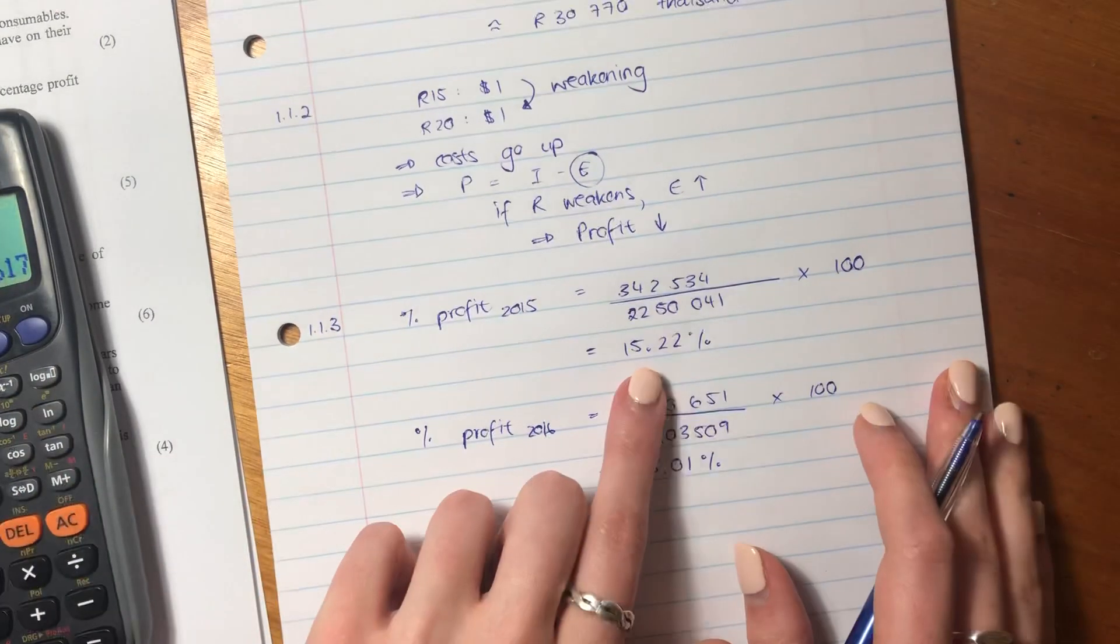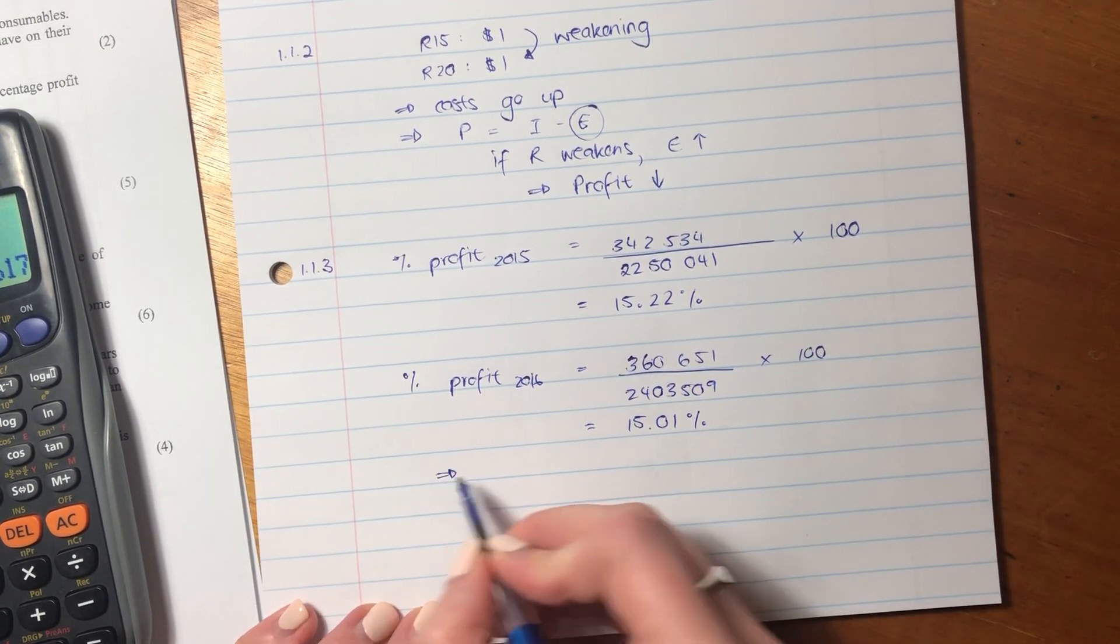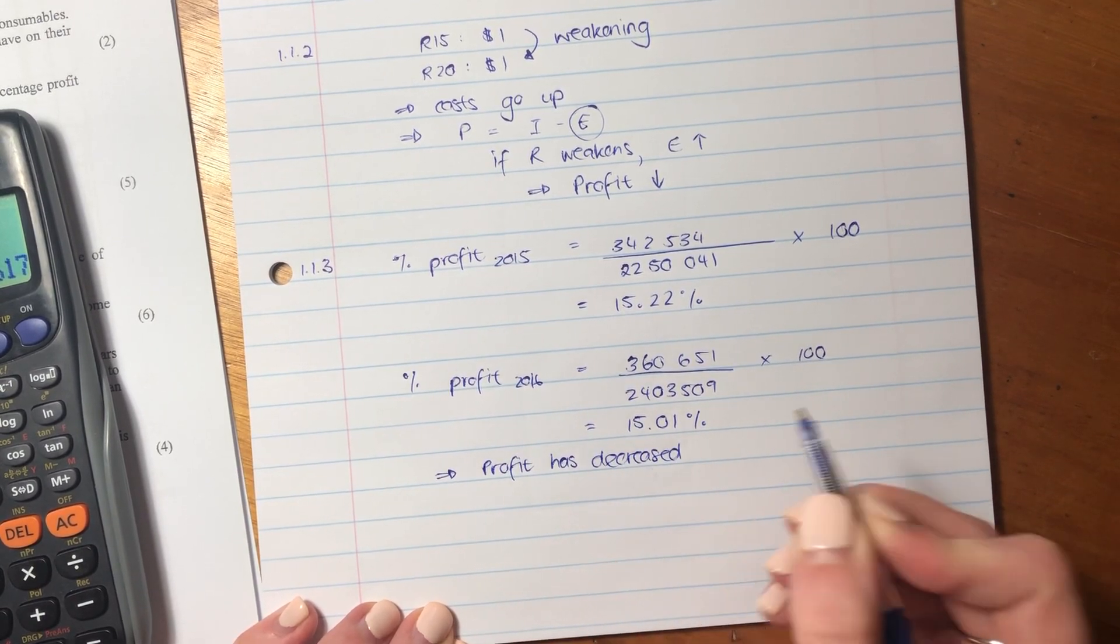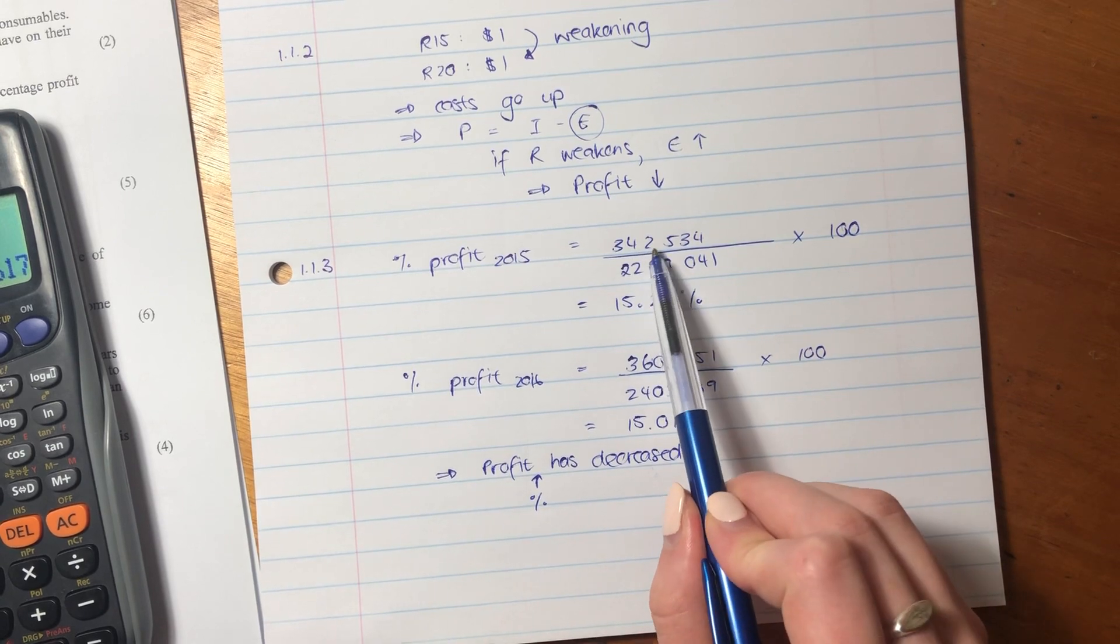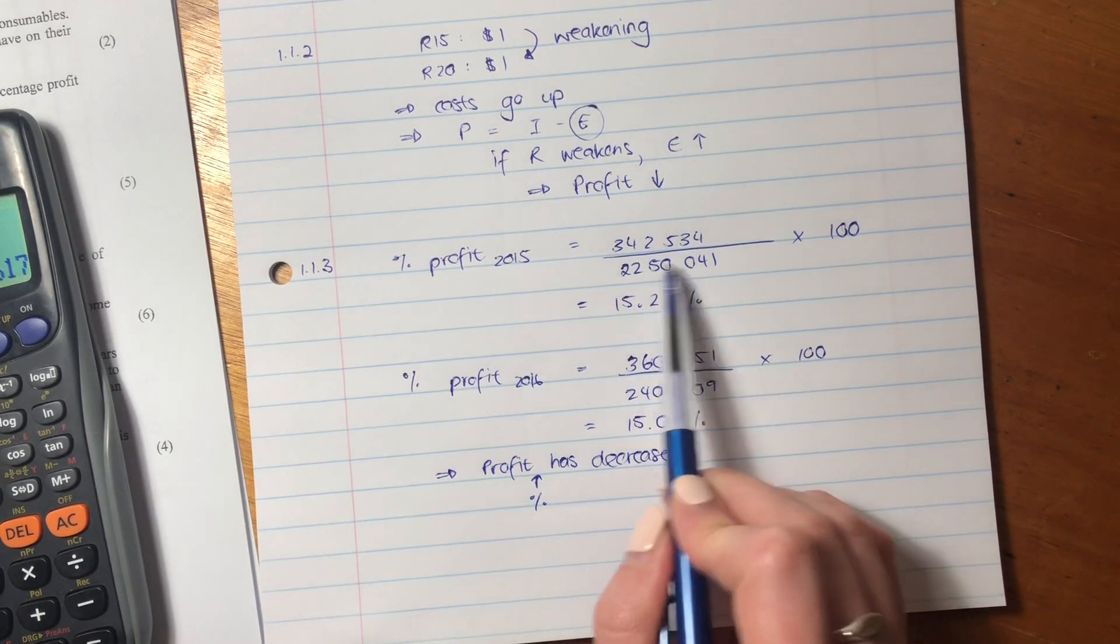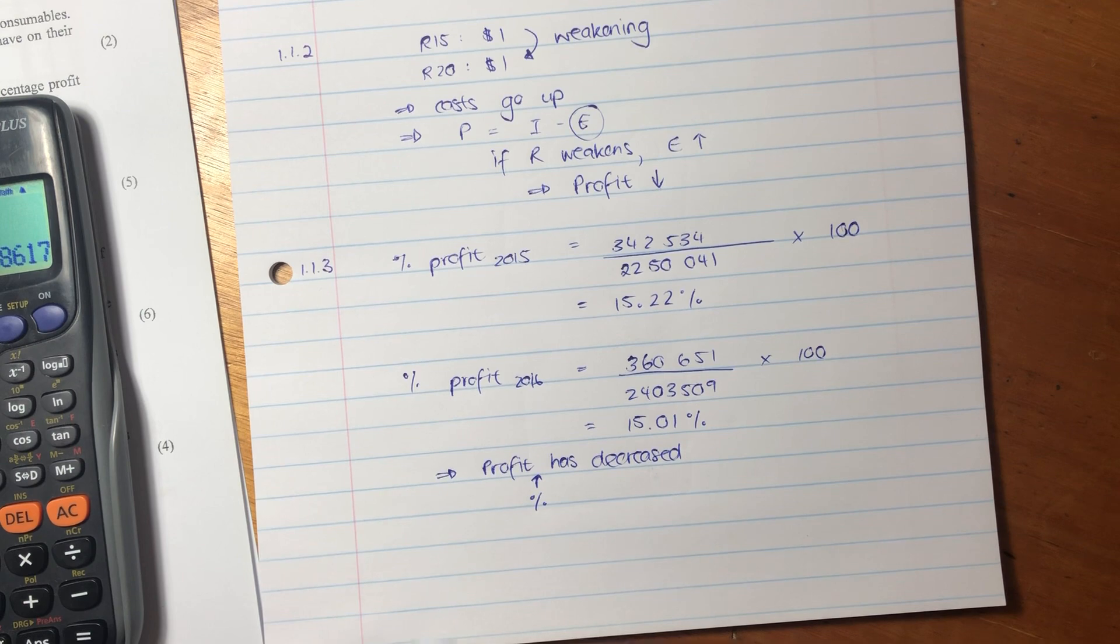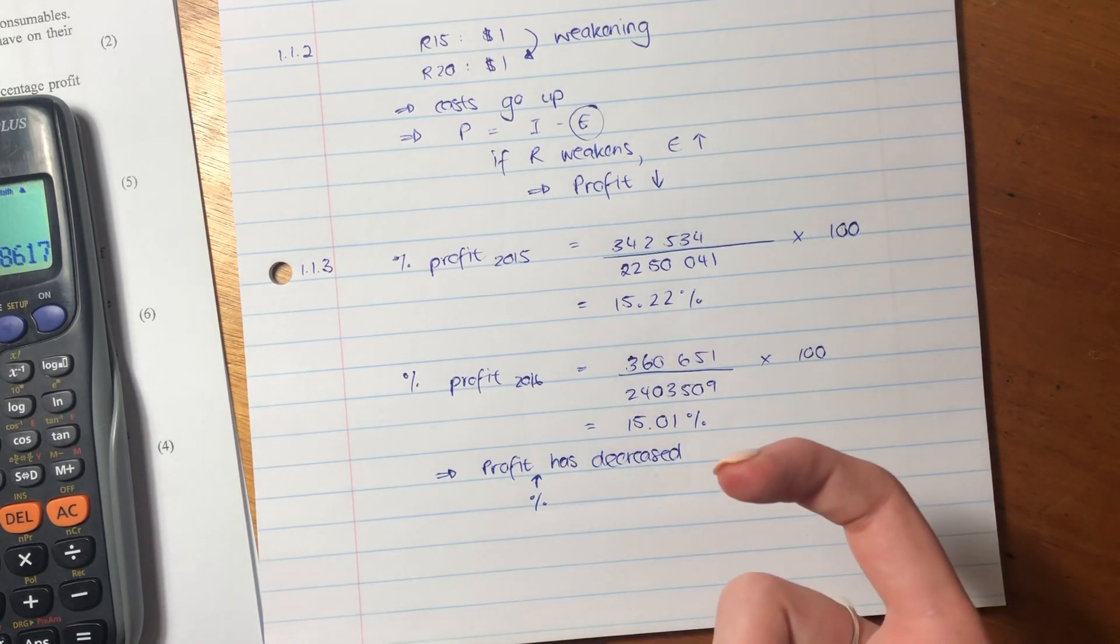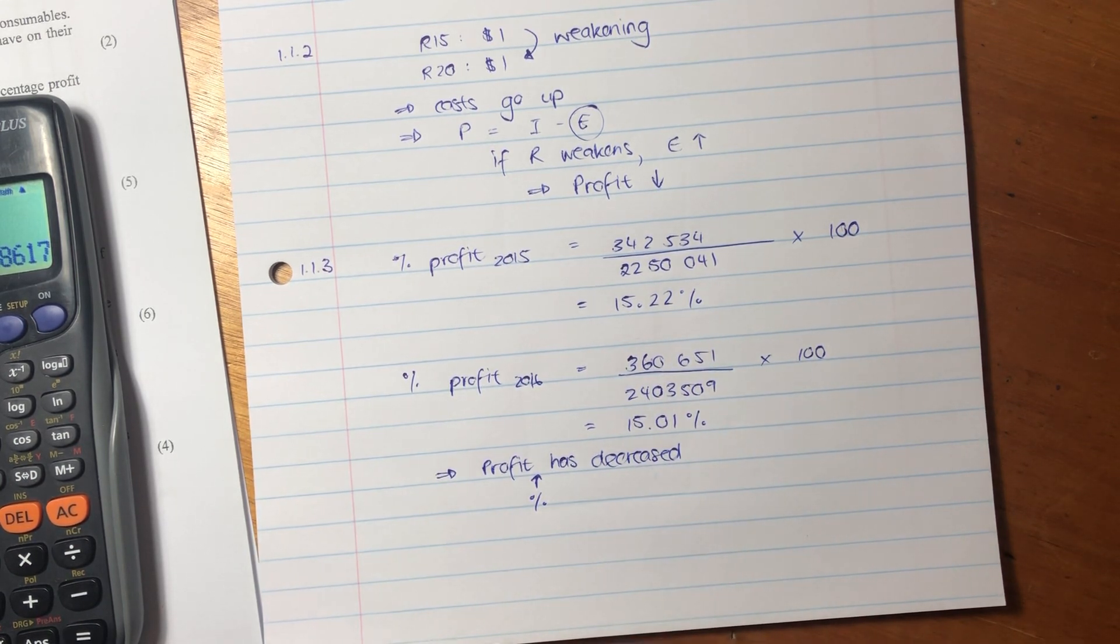So what has happened? We see that it's 15.22 in 2015 and it's 15.01 in 2016. So what has happened? The profit percentage has decreased, because we actually see that in absolute value, when we're talking about the absolute amount, we did earn more profit than we did in 2015. But as a percentage of our total annual primary income, it was less. So our profit percentage has decreased. It's important to understand the difference there because percentages and absolute amounts are different things because percentages form part of a total. So that's this question done.